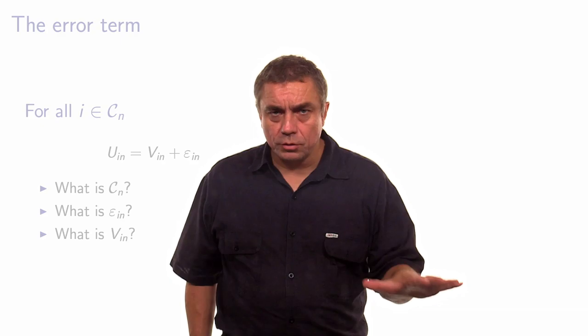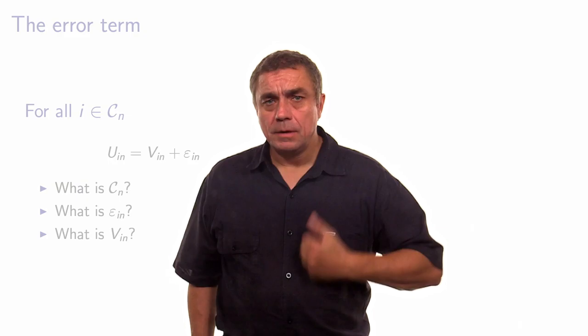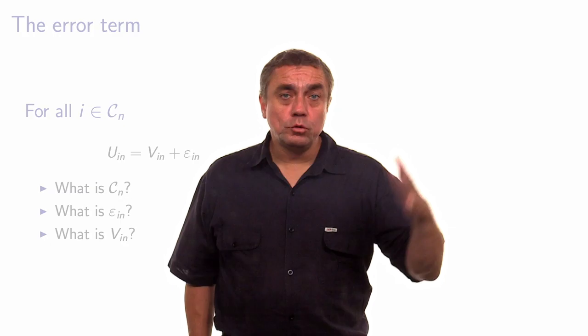Now that we have looked at the choice set — the assumptions about universal and individual specific choice sets, the use of deterministic rules, and how to write the model using either representation — we will move to the next video, where we will talk about the error term epsilon_in and the assumptions we will have to make for it. Thank you.